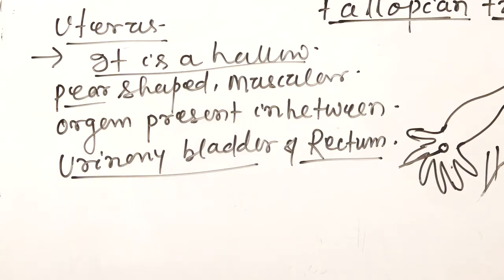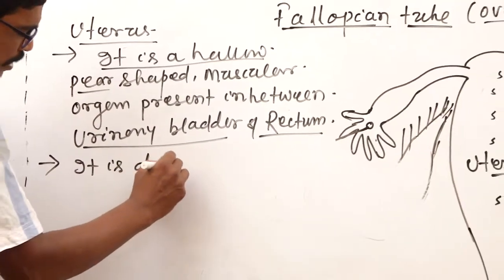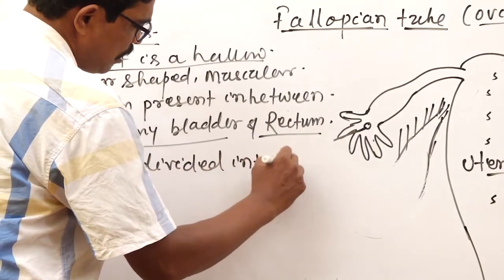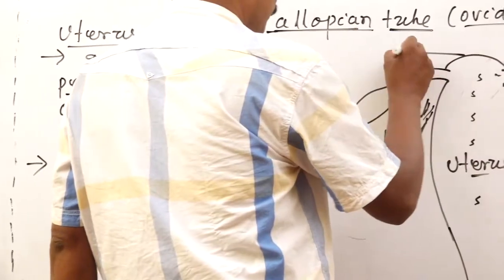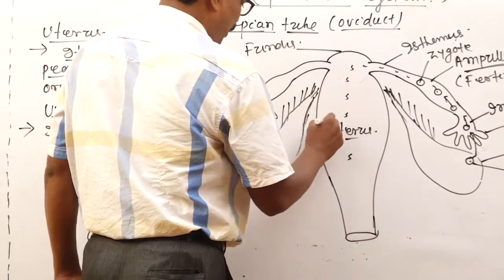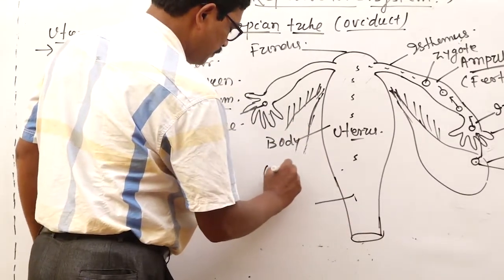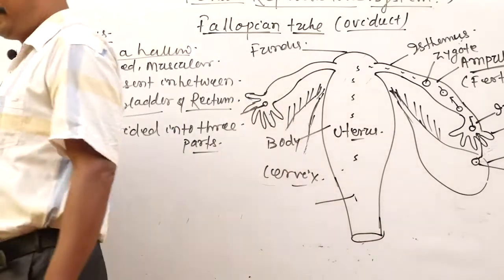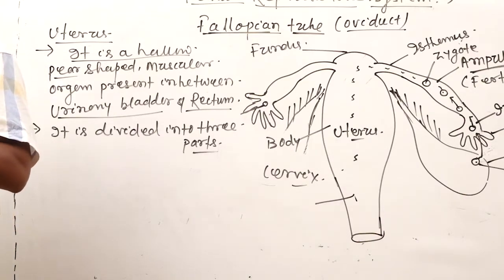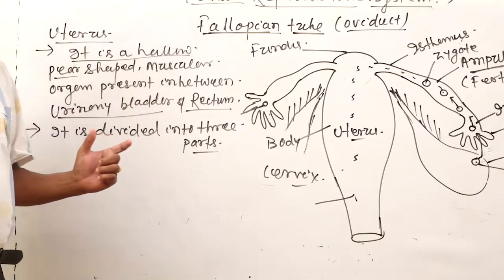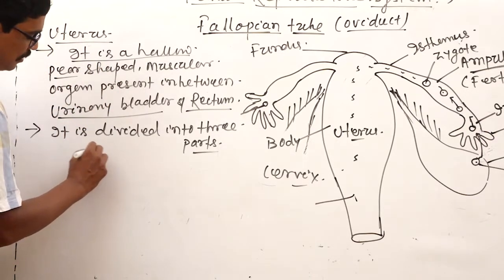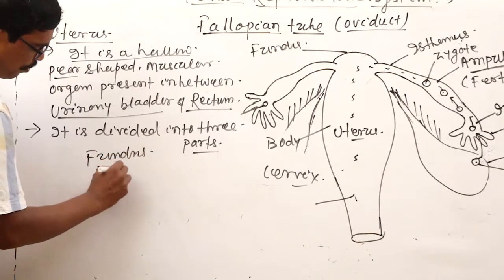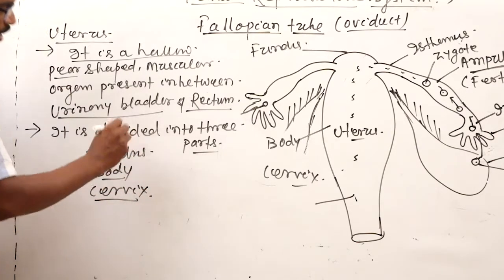It is divided into three parts: the fundus region, the body region, and the cervix region. The fallopian tubes open into the middle broad part — that is the body. The narrow inner part is called the cervix region, and the upper dome-shaped part is called the fundus.